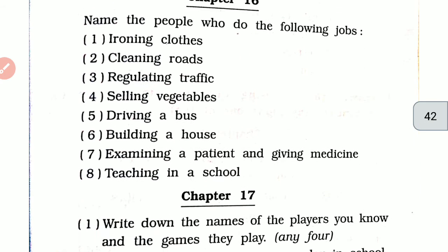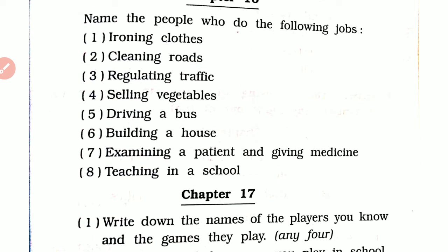Chapter 16. Name the people who do the following jobs. Ironing clothes: washermen. Cleaning roads: cleaners. Regulating traffic: traffic policemen. Selling vegetables: green grocers. Driving a bus: bus driver. Building a house: mason. Examining a patient and giving medicine: doctor. Teaching in a school: teacher.